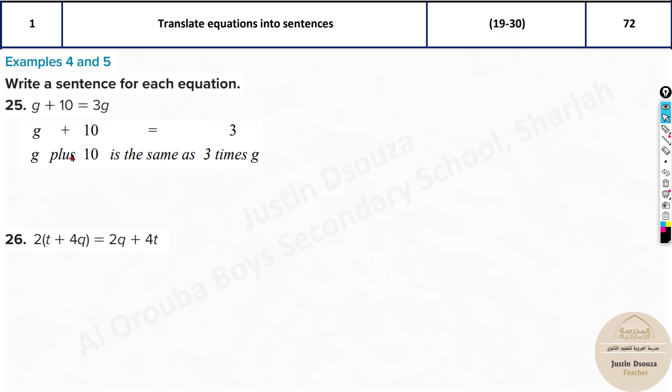So this is the answer. Just read the sentence over here. One-third minus four-fifths of z is equal to four-fifths of y cubed. You can see this term, this term, it's clearly mentioned. Now this is very simple. G plus 10 is same as three g. It should be three and g over here, which is missing. I apologize for that. It's three times g.